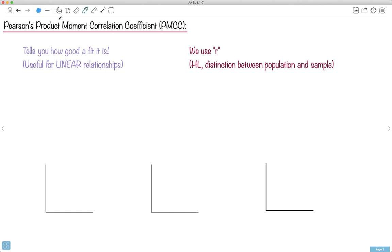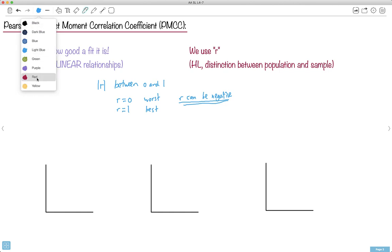Let's talk about Pearson's Product Moment Correlation Coefficient, which is sometimes called PMCC. Some people just call it R, but you've got to watch out because depending on which class you're in, we have to specify what R is. In HL we have a distinction between population and sample, but in this case we're just going to call it R for the Pearson's Correlation Coefficient. The absolute value of R will be between 0 and 1.